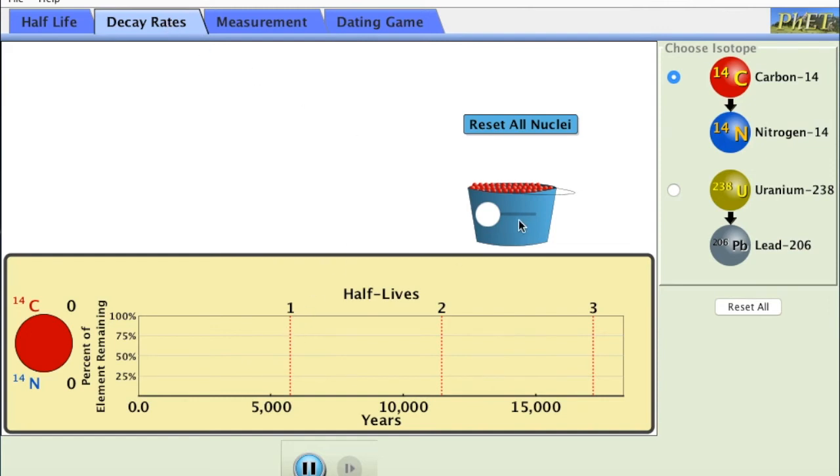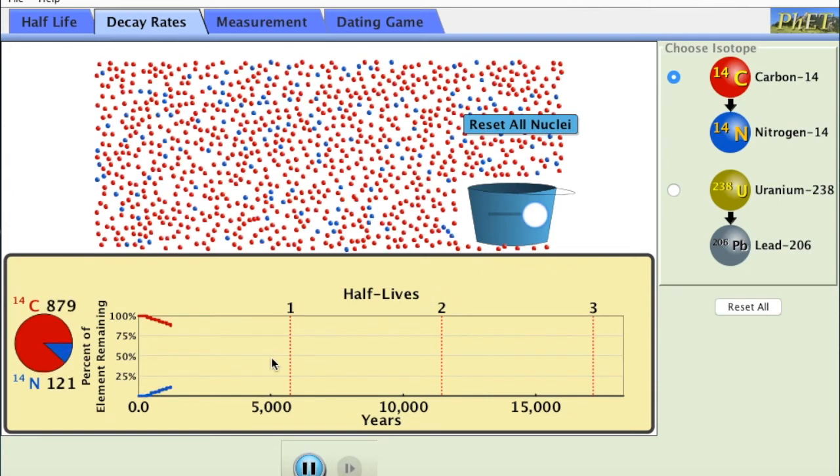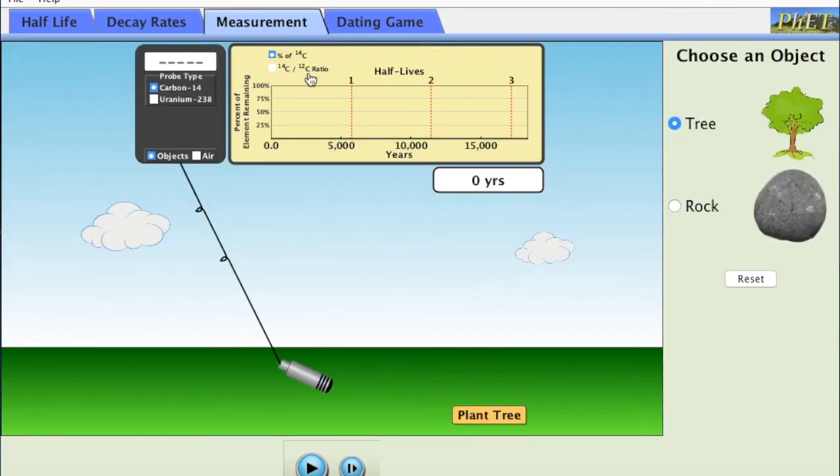From there we'll go over to decay rates. This is another one where we just add atoms out of the bucket onto the screen. This one shows the rate at which one isotope decays and the other isotope is created. As you can see, when it hits that first half-life it's a 50-50 split. When it hits that second half-life there's 25% of one and 75% of the other. Again you can change your isotope.